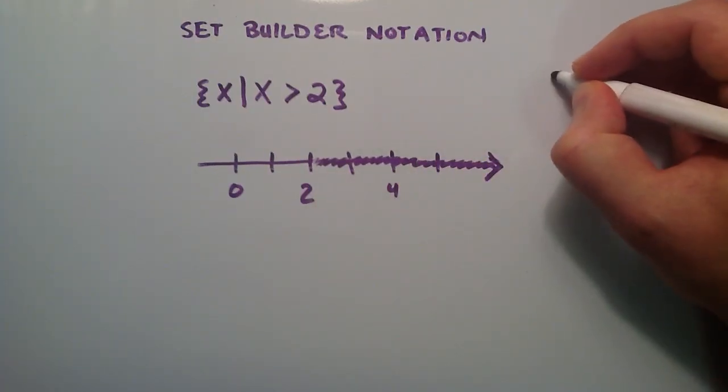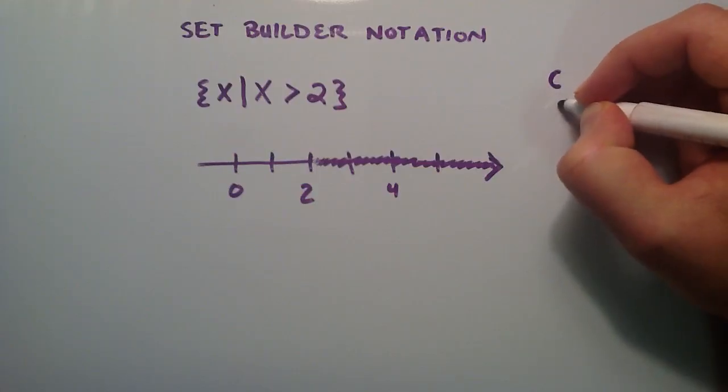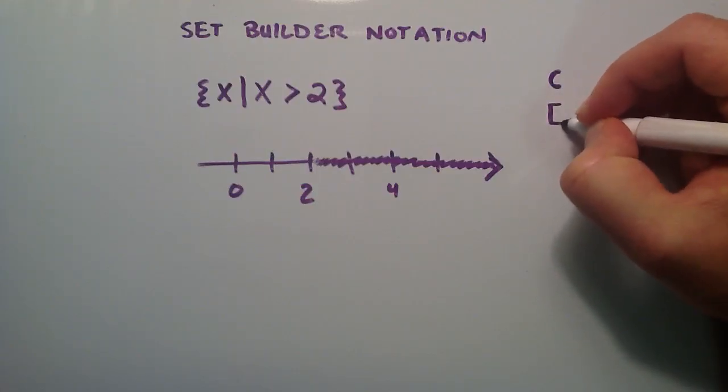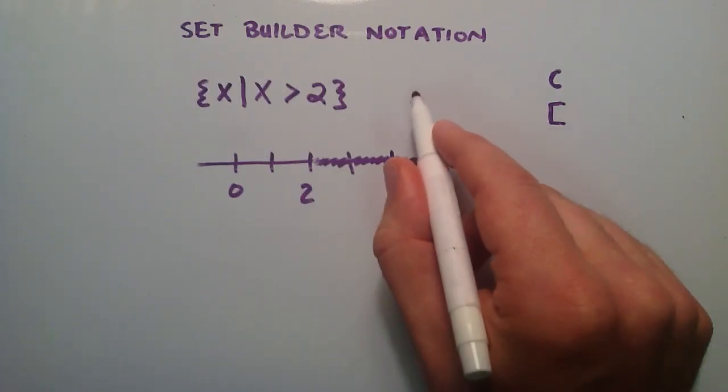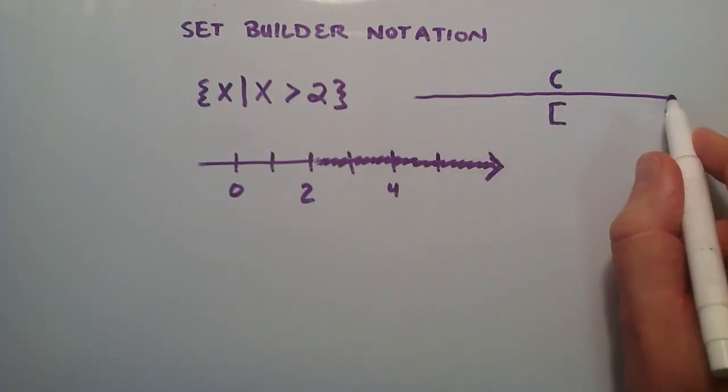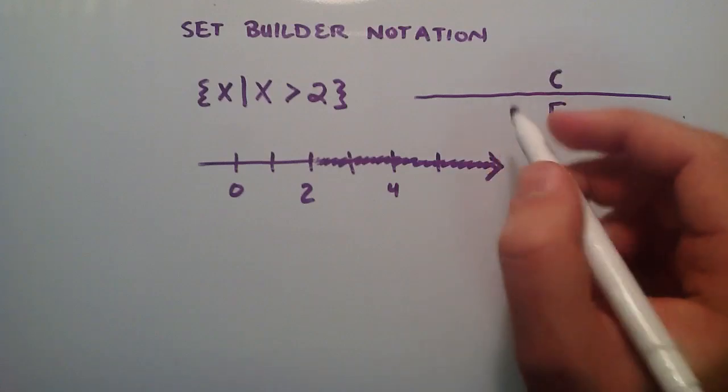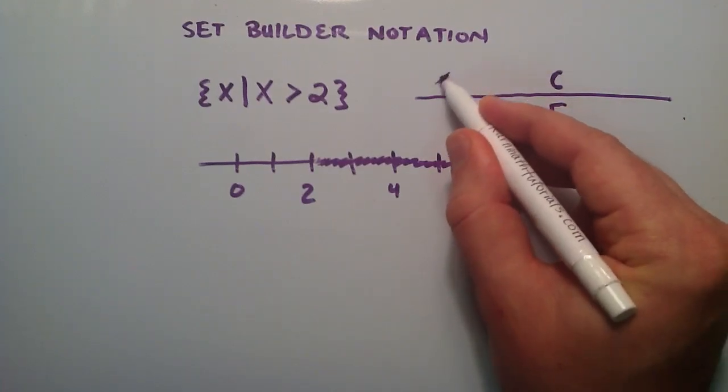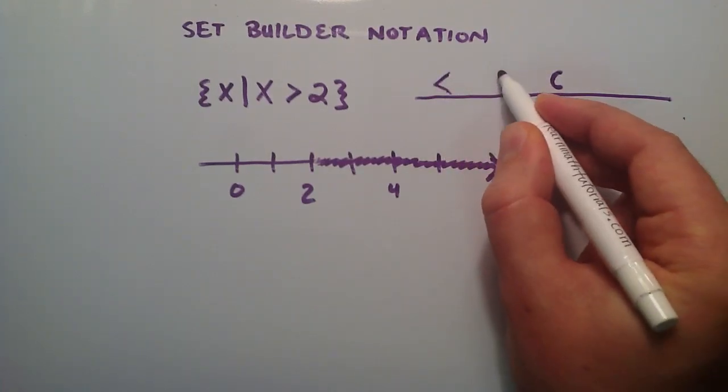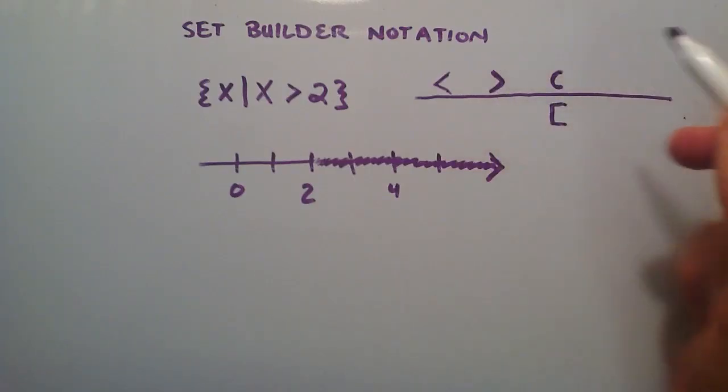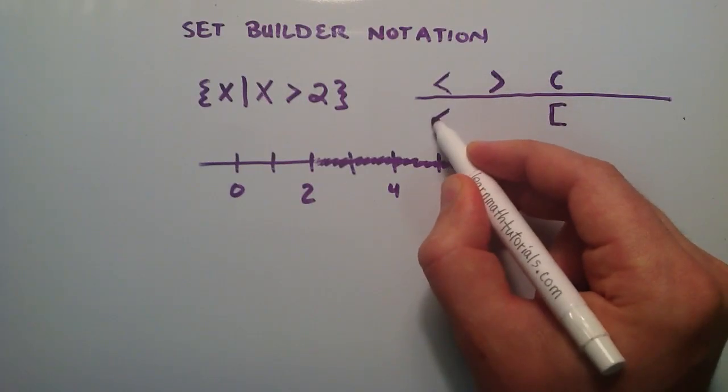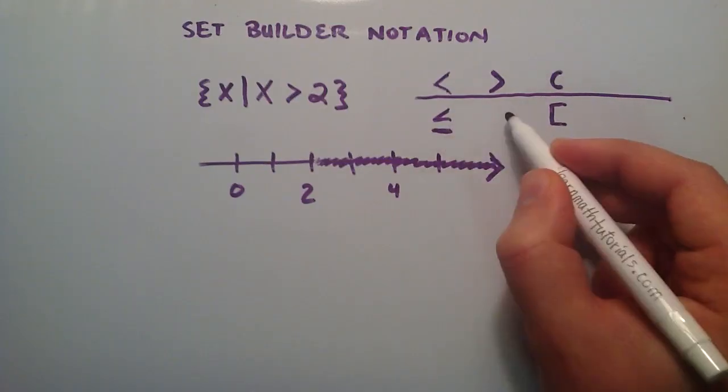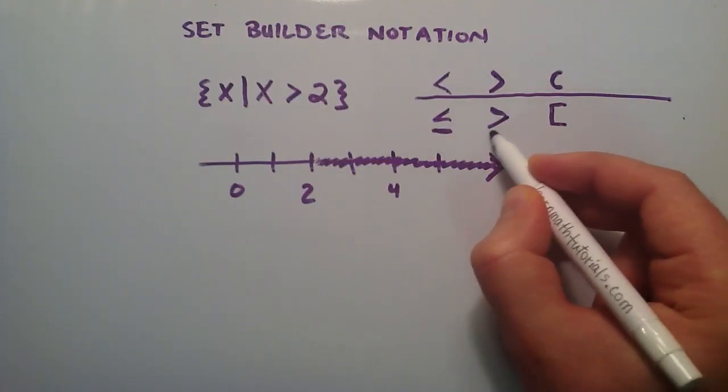There's two choices. We can either put a half circle here or a square bracket. So one of these choices is right, and one of these choices is wrong. Let me show you when you want to use each of these. We use the half circle when we're dealing with a less than sign or a greater than sign. We use the square bracket when we're dealing with the less than or equal to sign or the greater than or equal to sign.